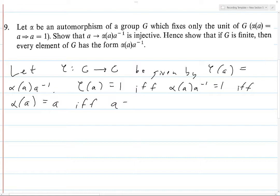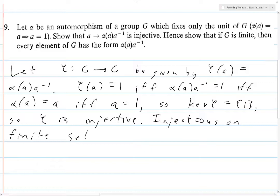So because of this we know that the kernel of phi is just the identity element one. Then, so phi is injective. Then, injections on finite sets are bijections. That's basically by process of elimination.